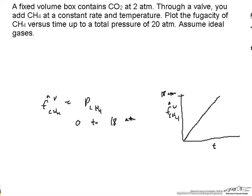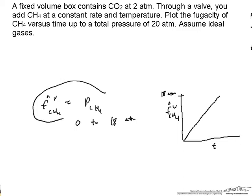As we increase the pressure up to 20 atm just by adding methane, the partial pressure of methane goes from zero to 18 atmospheres, and therefore the fugacity does as well. And we've got a plot that looks like the one on the right.